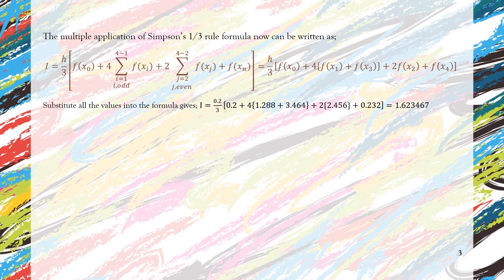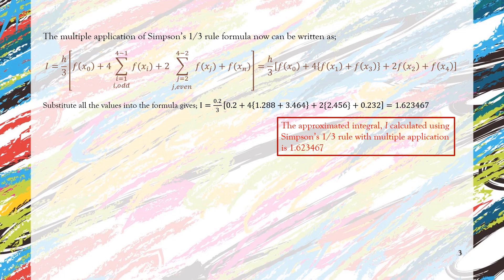So we can substitute all the values that we have now into the formula and we will get 1.623467. This is the approximated integral of that function when we approximate using the multiple application of Simpson's 1/3 rule.